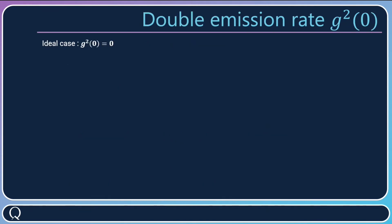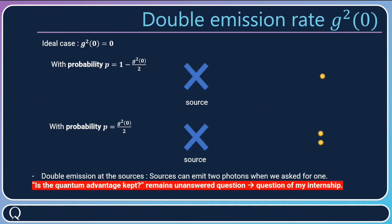Now a third source of noise is double emission rate, G2. In the ideal case, G2 is equal to zero. This means that a source will emit only one photon when you ask for one. With probability 1 minus G2(0) over 2, the source could emit one photon, and with probability G2(0) over 2, the source could emit two photons.